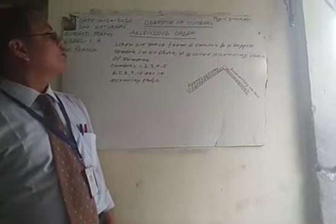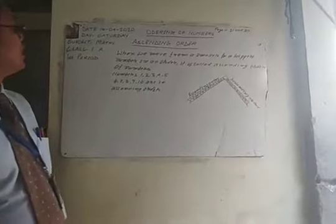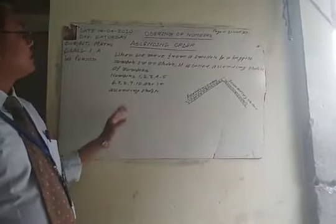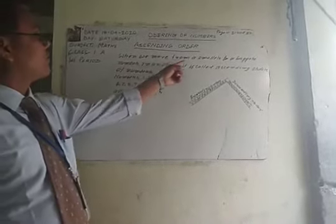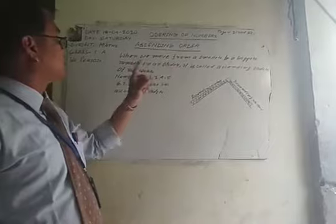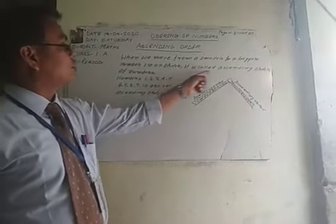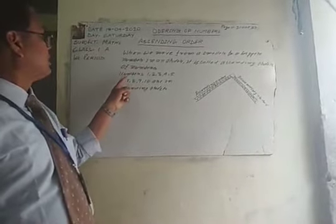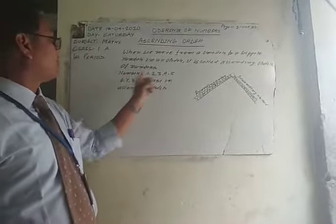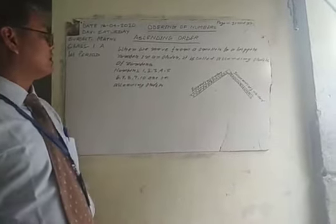Good morning children. I am going to teach mathematics for class 1. Today we are teaching ascending order. When we move from a smaller to a bigger number in order, it is called ascending order of numbers. Numbers 1, 2, 3, 4, 5, 6, 7, 8, 9, 10 are in ascending order — it means 1 to 10.